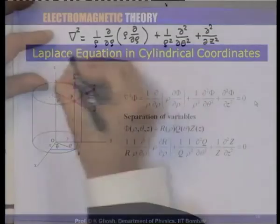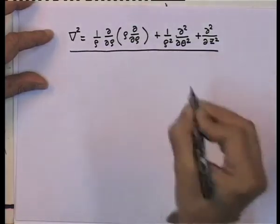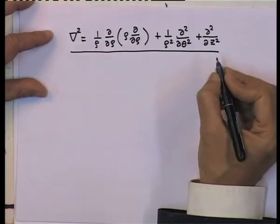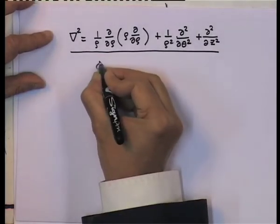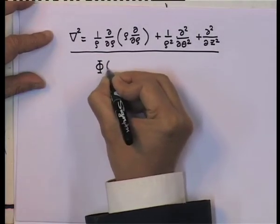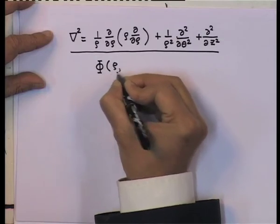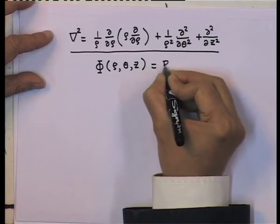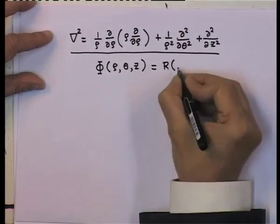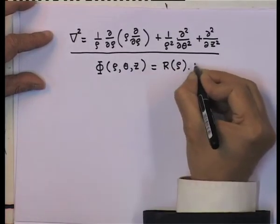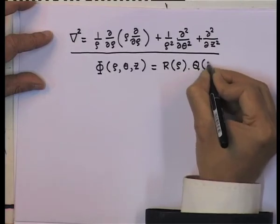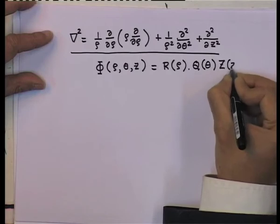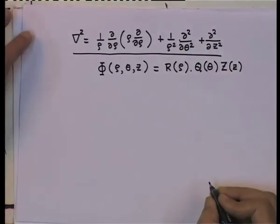The Laplace equation del squared phi equals 0 in cylindrical coordinates can be solved by separation of variables. The variables here are rho, theta, and z, so we write phi as a product of a function R of rho, a function Q of polar angle theta, and a function Z of the z variable.